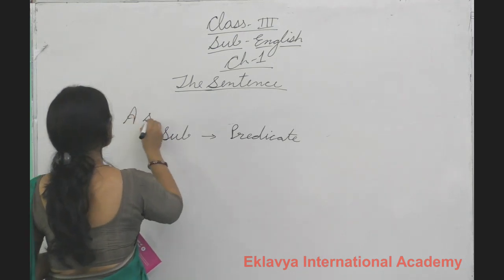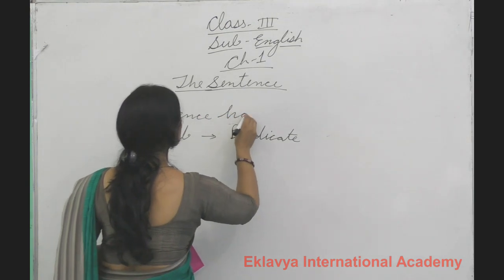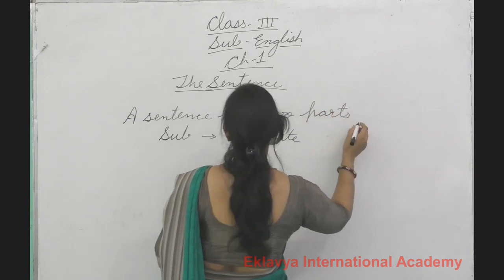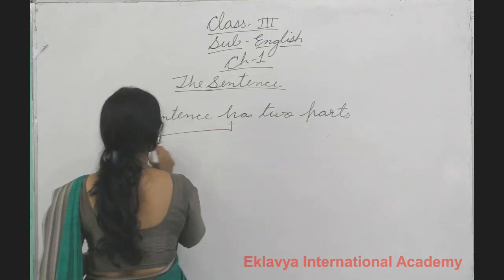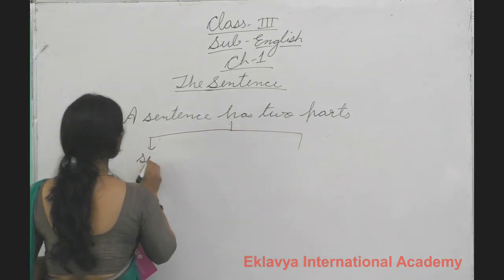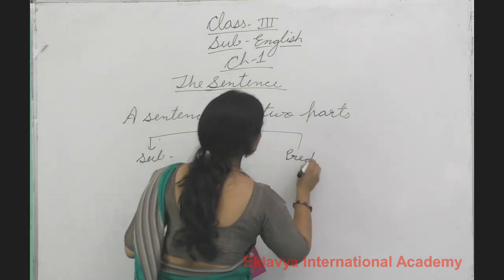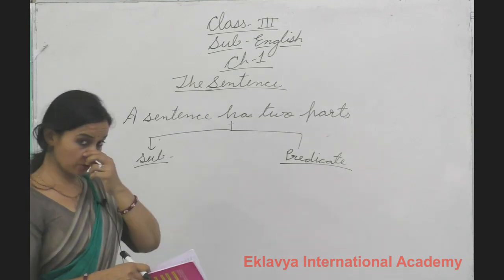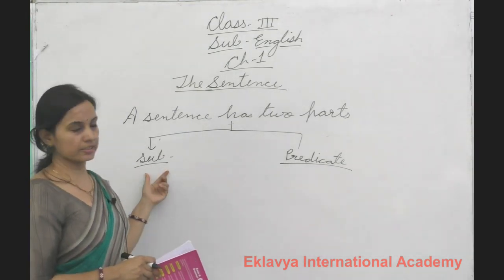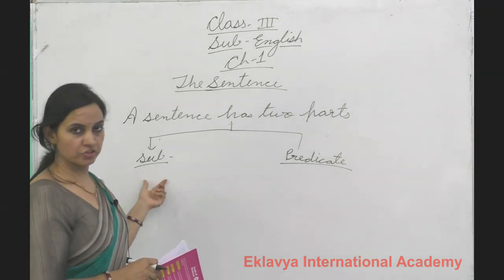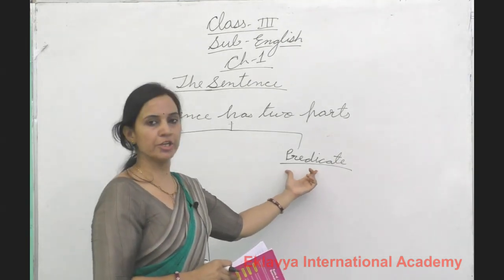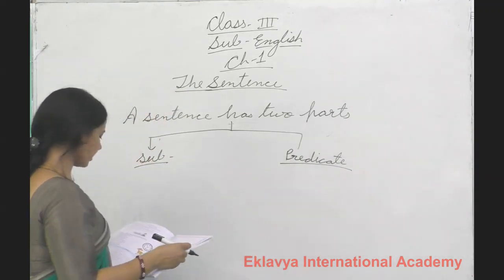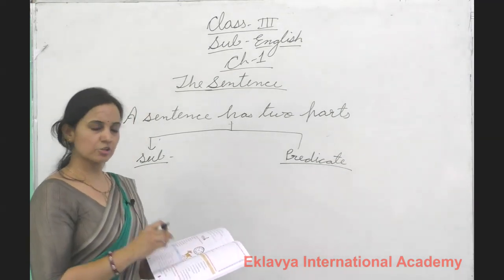A sentence has two parts. One is the subject and the second one is the predicate. The subject is the naming part — who or what is spoken about. And the predicate is the doing part — what is said and described about the subject. Let's check the exercises given in the book.